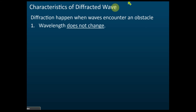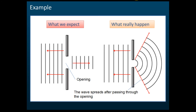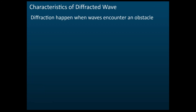After diffraction, the wavelength does not change — this is important. The wavelength is still the same. You can see here: this is the wavelength lambda before, and this is the wavelength lambda after. The wavelength here and the wavelength after diffraction is still the same — the wavelength remains unchanged.